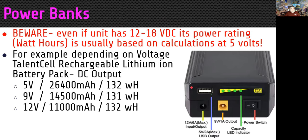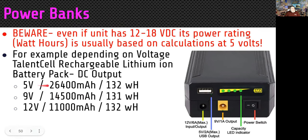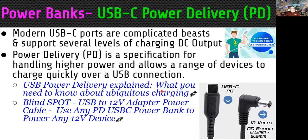Here's an example of another unit with a 9V output, a 12V output, a USB port, a battery switch, and an indicator. Notice the rating changes depending on how you look at it — at 5V it's 26,000 milliamps, but at 12V it's only 11,000. Of course they advertise it as a 26,000 milliamp supply.